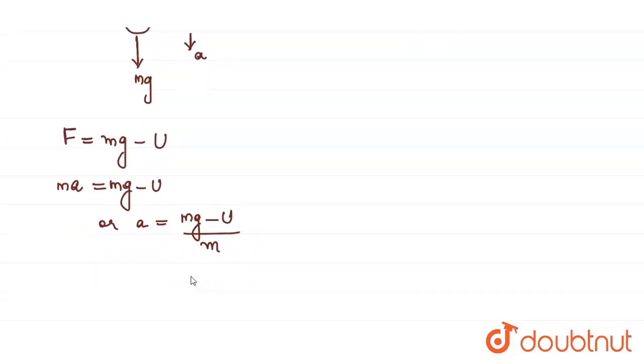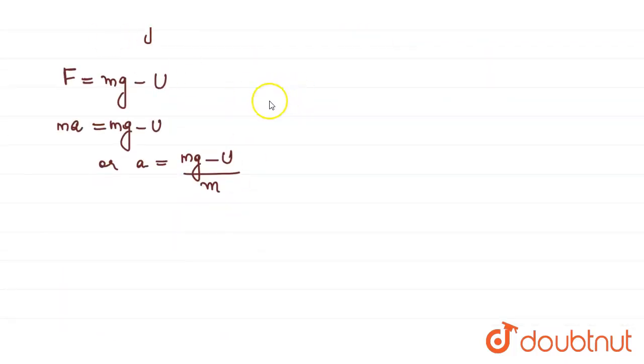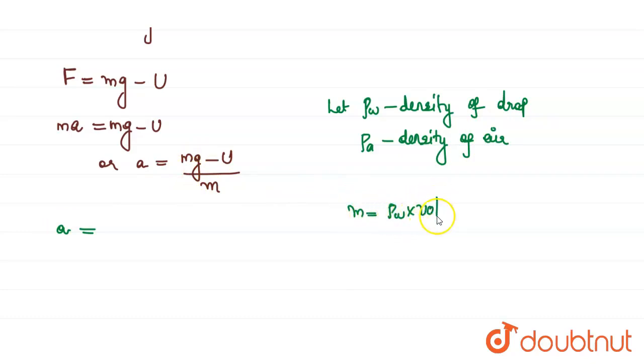M is mass of the raindrop. In our question, the mass of the raindrop is not given, so we can analyze the mass in terms of density. Let ρw be the density of water or the raindrop, and ρa is the density of air. We can write the equation for acceleration as density of the raindrop times volume of that drop.